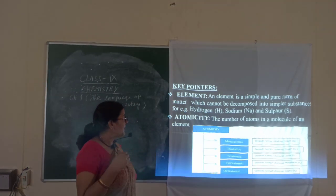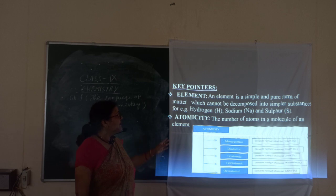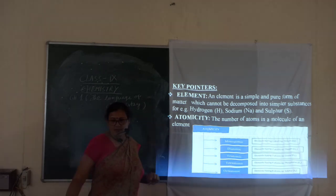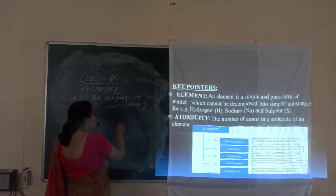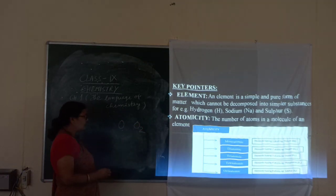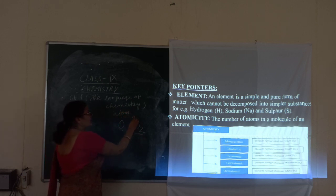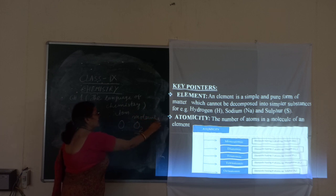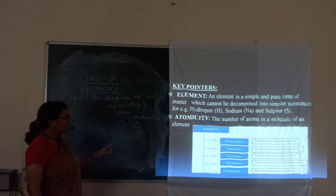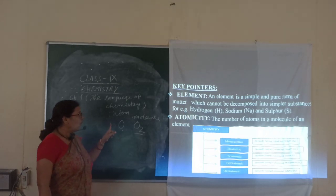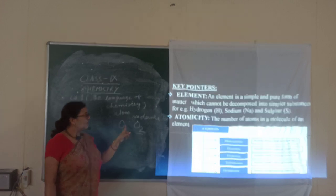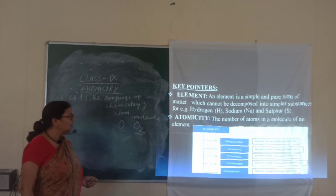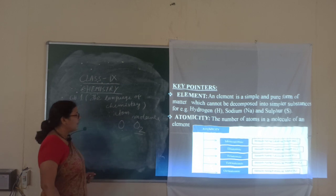And the first one is element. The element and compound, atoms and molecules — if I write down here, O and O2, you will find out O is an atom and O2 is the molecule. You will see the difference that atom is having one, and molecule is having two. That means, molecule of oxygen consists of two atoms.